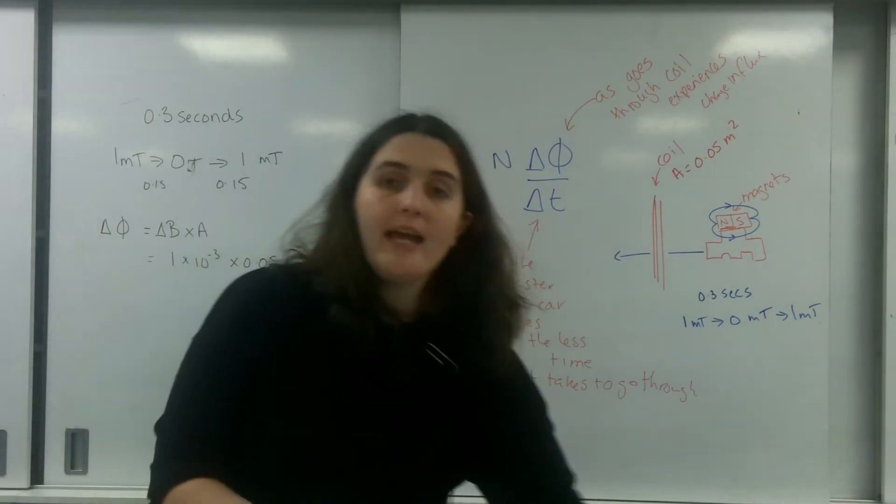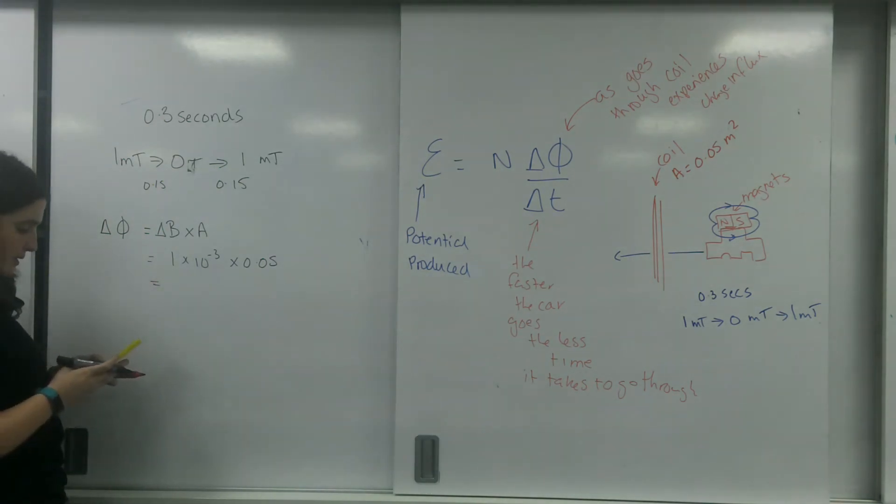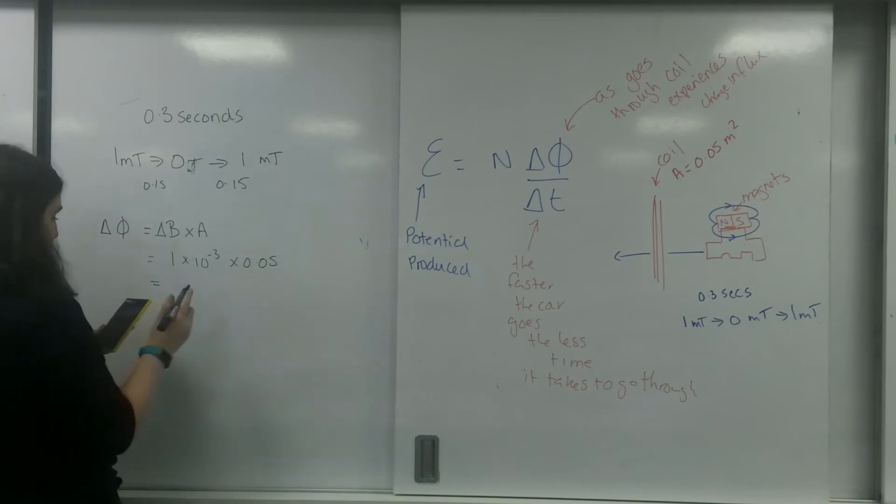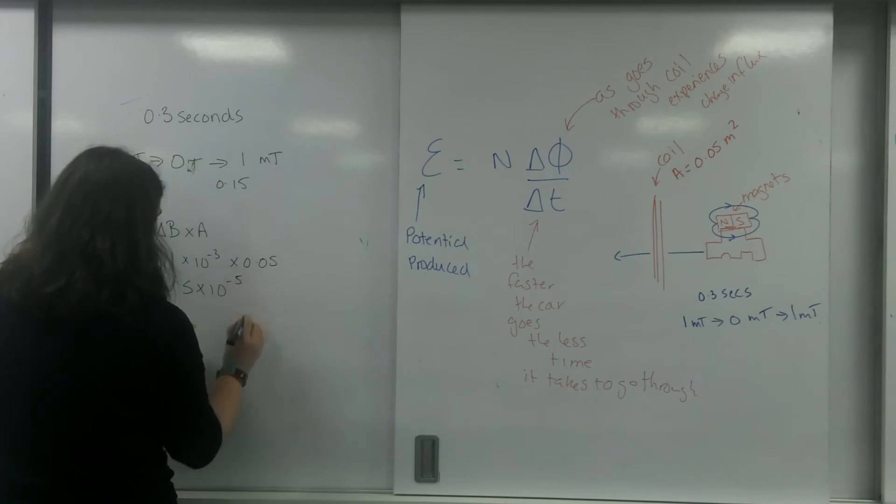So I can work out my change in flux. So 1 times 10 to the minus 3 times by 0.05 equals 5 times 10 to the minus 5 Webers.